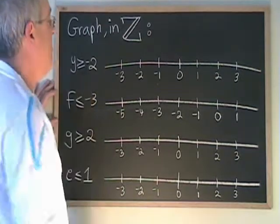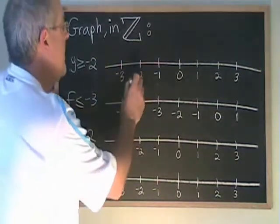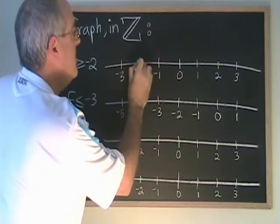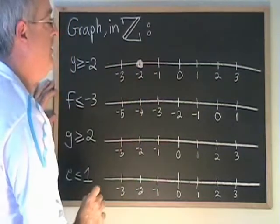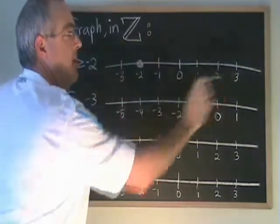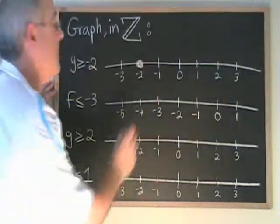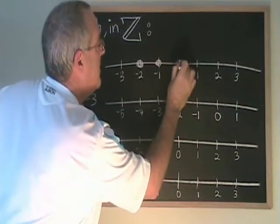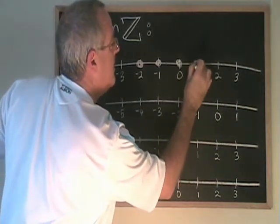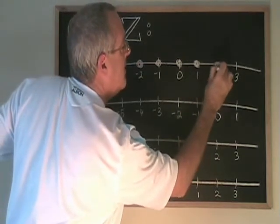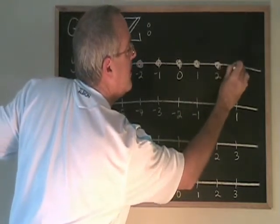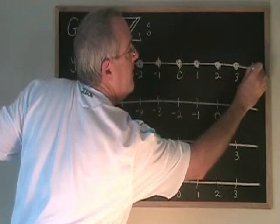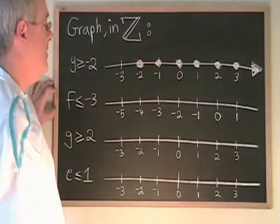W greater than or equal to negative 2. Negative 2 is equal to negative 2, so it's part of the answer. And then all the numbers greater than negative 2 are part of the answer, going on forever in the positive direction.